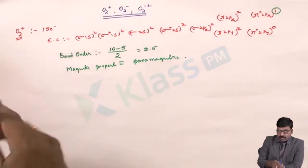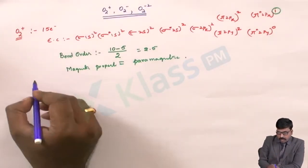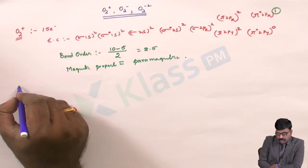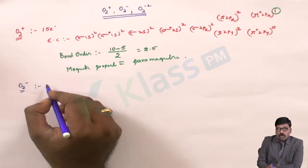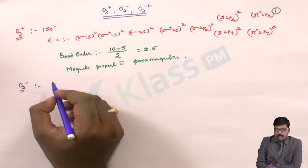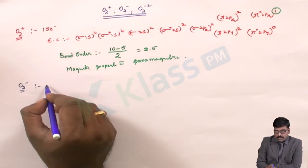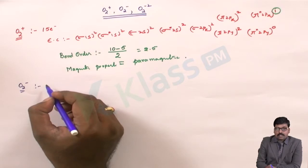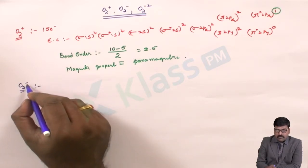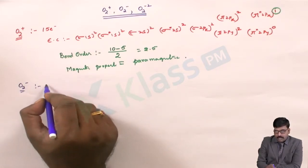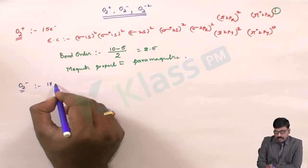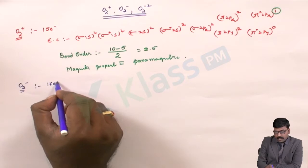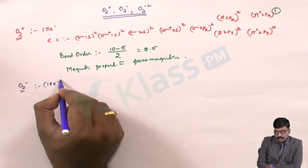In the same way, we will write the electronic configuration for O2 minus. O2 minus has 16 electrons plus one extra electron, giving a total of 17 electrons.